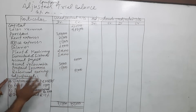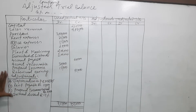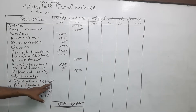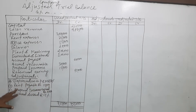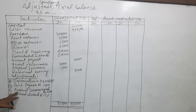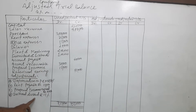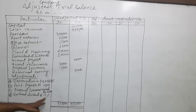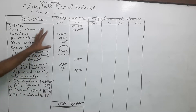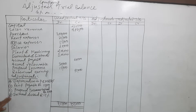The adjustments are: first, depreciation on plant and machinery; second, rent payable; third, prepaid insurance expired; and declared dividend at the rate of 15%.